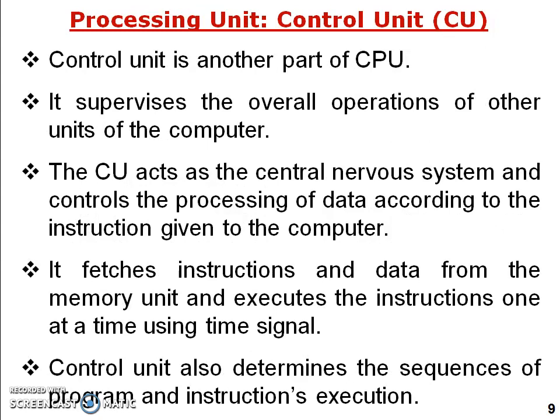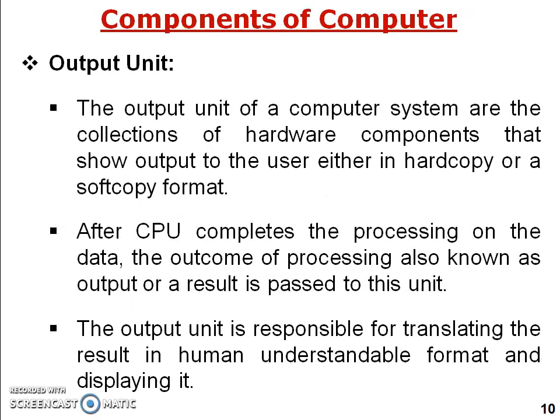The processing unit's second part is the control unit — this is the main part from which signals are generated. The control unit supervises the overall operation of all units of the computer. The CPU acts as the central nervous system and controls the processing of data according to the instructions given. It fetches instructions and data from the memory unit and executes instructions one at a time using time signals. The control unit also determines the sequence of programs and instructions, executing them one by one, one at a time with a single time signal.